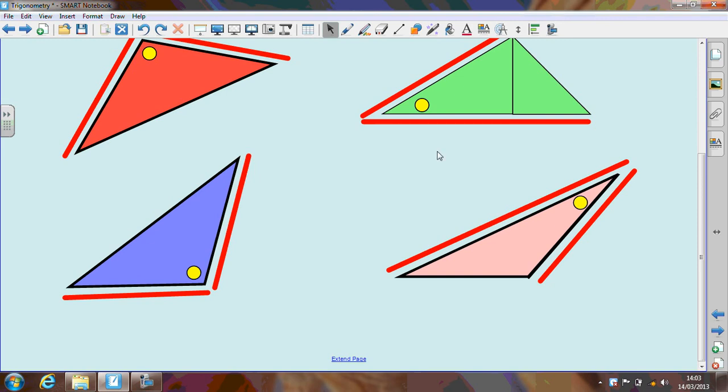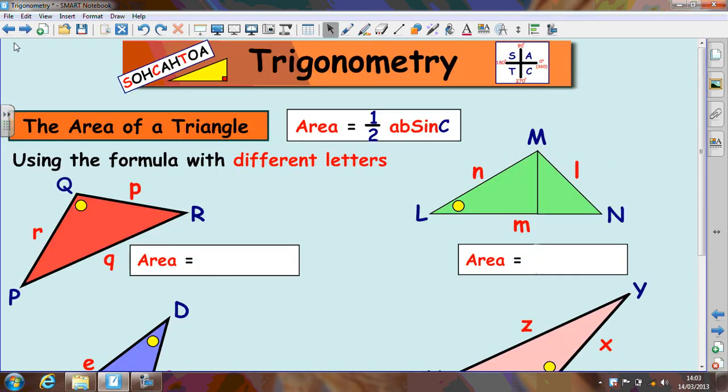It's also important to be able to rearrange the formula to use the letters that are on your triangle. The formula in the formula sheet always uses A, B's and C's but in the questions that we see in the exam papers or books don't always use A, B's and C's.